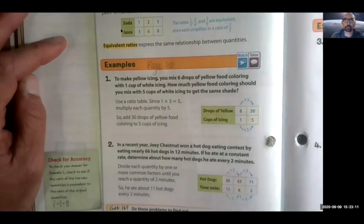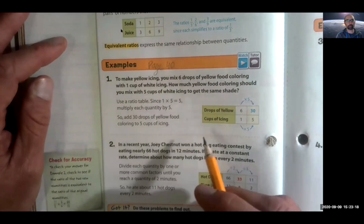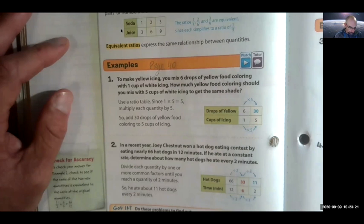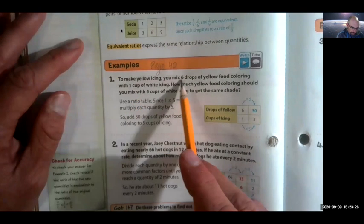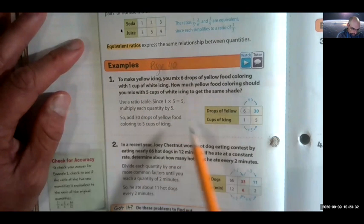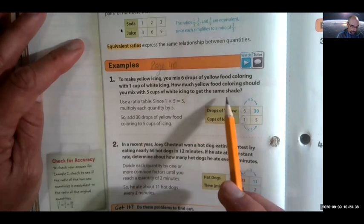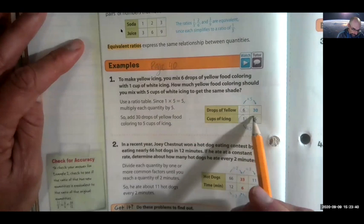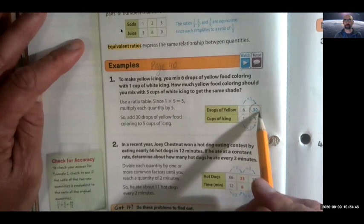Okay. So now let's go look at our books on page 40. So pause the video and go to page 40. Ready? Go. All right. So you should be on page 40 now. And we're going to look at some examples of stuff that we really just did right now. So here it says, to make yellow icing, you mix six drops of yellow food coloring. Drops of yellow is six. With one cup of white. One cup of white. How much yellow food coloring should you mix with five cups of white icing to get the same shade? So if you want to find out five, well, one times five is five. And so six times five is 30. So then your answer would be 30. Got it?